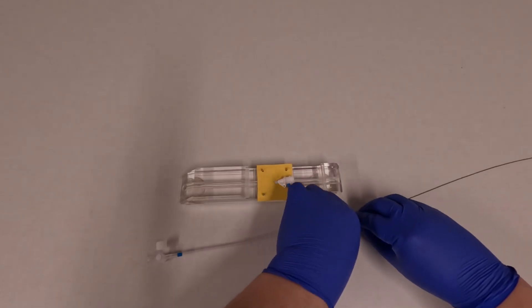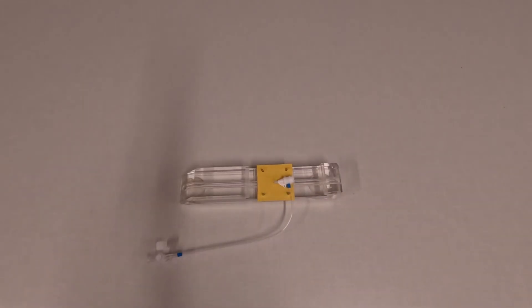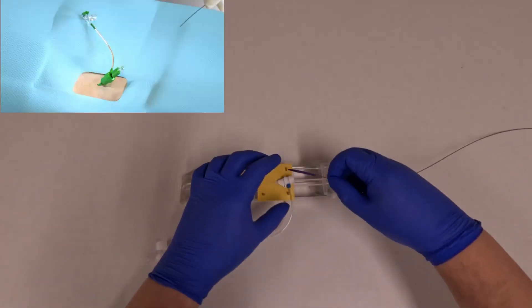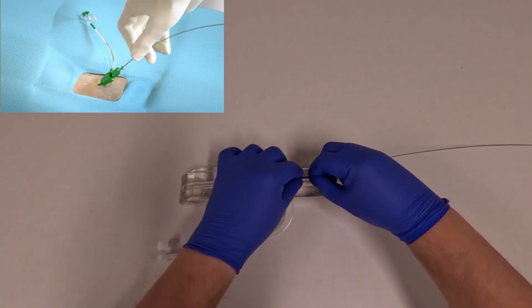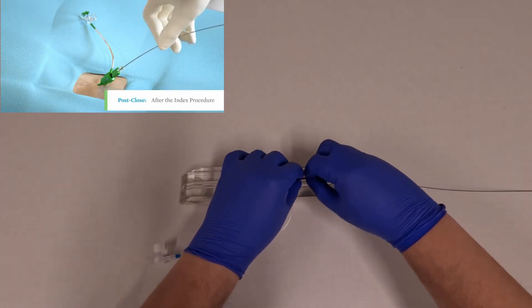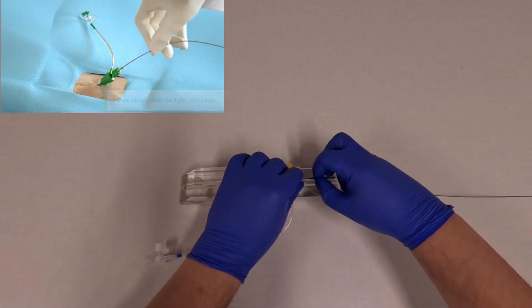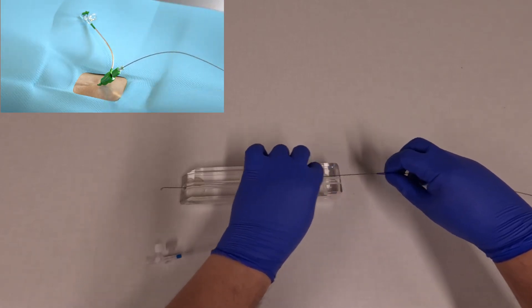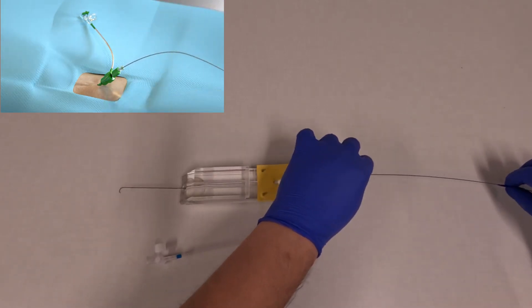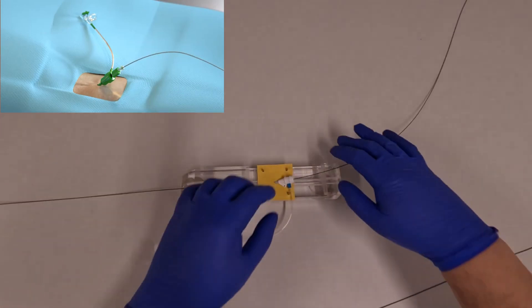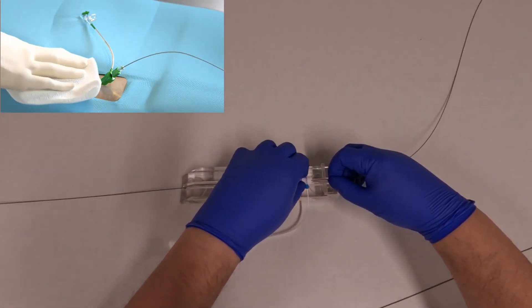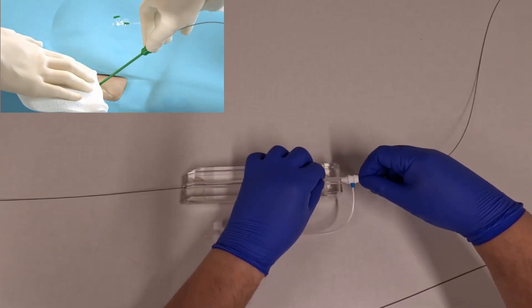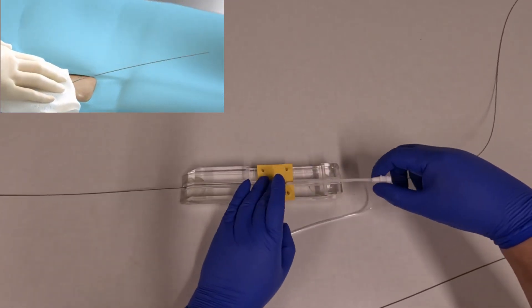Now when you're ready to close you'll have your sheath in the arteriotomy or venotomy and take your 035 exchange wire and re-access the vessel. Now you're going to walk out the sheath and remember that you need to maintain hemostasis by manual compression.